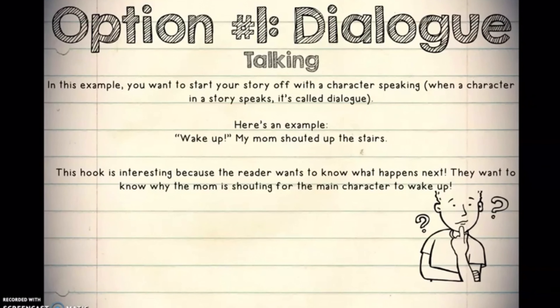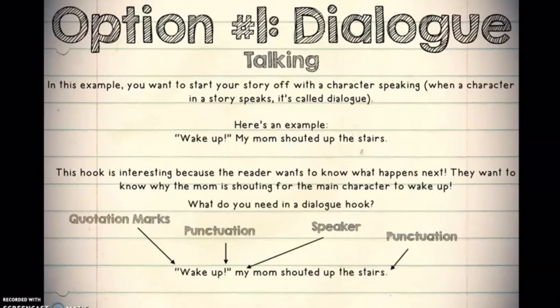This could be an interesting way to start because the reader wants to know what's going to happen next — why is your mom getting you to wake up so suddenly? What's the main issue that's actually happening? You've got your quotation marks around where the person's speaking, you have your punctuation at the end of it, and then after you say who it is that's talking, you have your punctuation at the end after that.